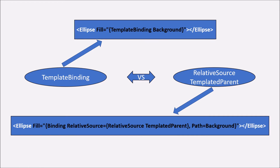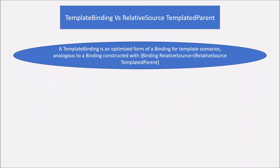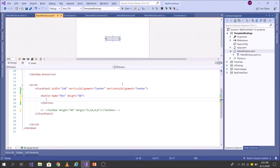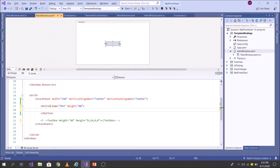To understand this, let's see in what scenario we use these two concepts. TemplateBinding is an optimized form of a binding for template scenarios and it is analogous to a binding constructed with RelativeSource TemplatedParent. So both concepts are used in templated scenarios, and TemplateBinding is an optimized form. Let's go to Visual Studio to understand this in detail.